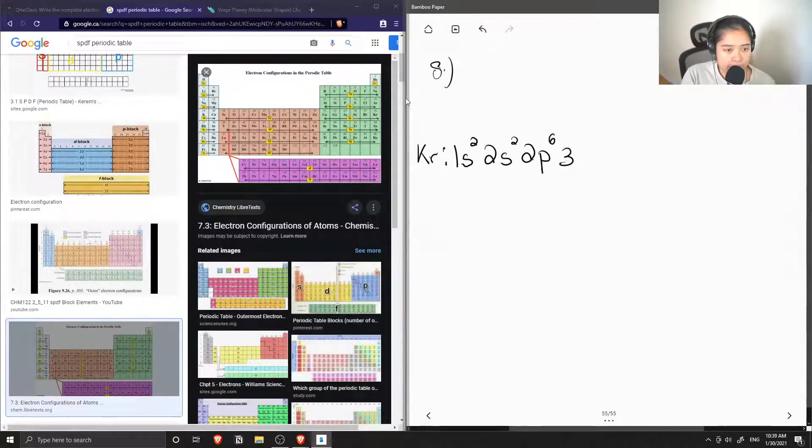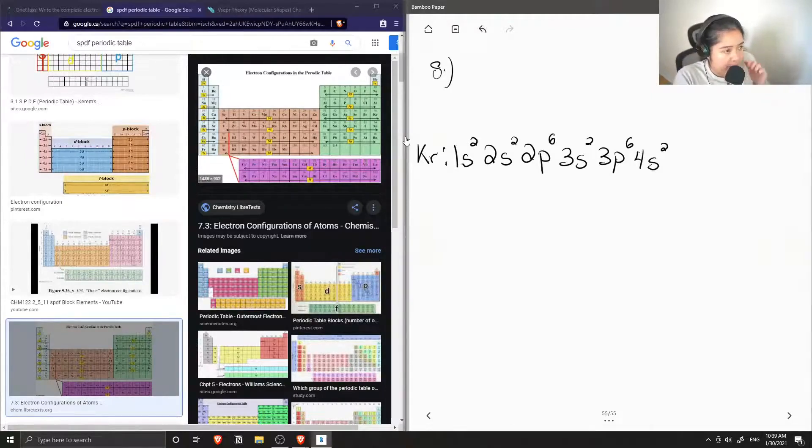Next row is 3s2. Moving over, we write 3p6, then 4s2, and then once we get to the d block,